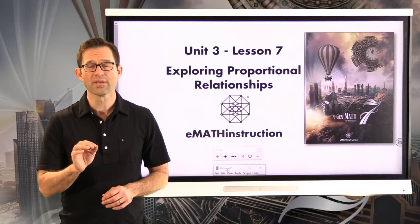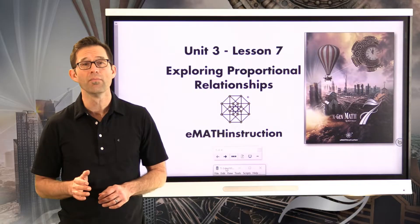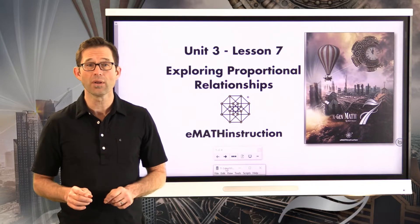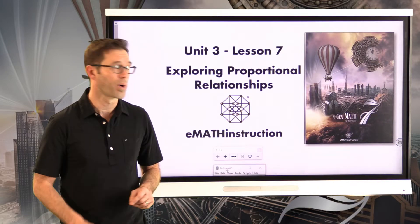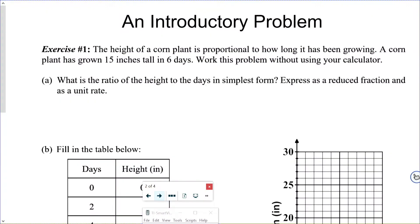You're going to need your calculator a little bit in this lesson, but mostly for the second exercise. Let's get into it right away. Here we go, an introductory problem, exercise number one. The height of a corn plant is proportional to how long it's been growing. A corn plant has grown 15 inches tall in six days. Work this problem without using your calculator.